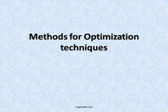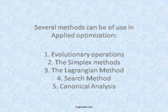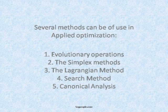Methods for optimization techniques. Several methods can be of use in applied optimization: 1. Evolutionary operations, 2. The simplex methods, 3. The Lagrangian method, 4. Search method, and 5. Canonical analysis.